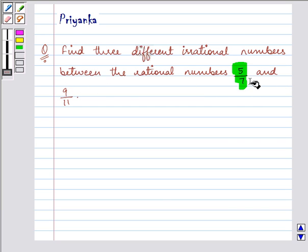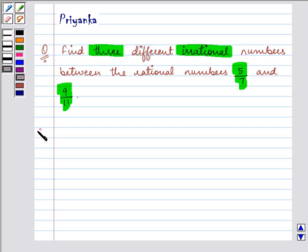So we need to find three different irrational numbers between 5 by 7 and 9 by 11. So let us start with our solution.